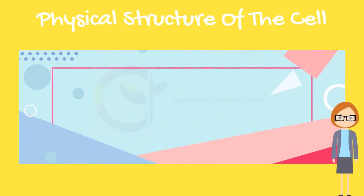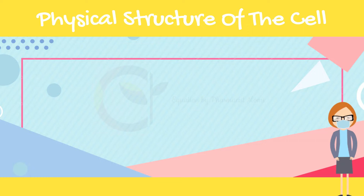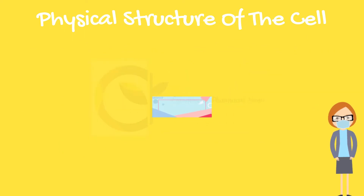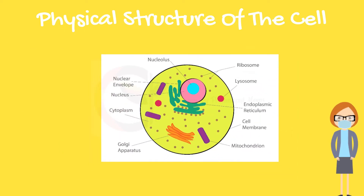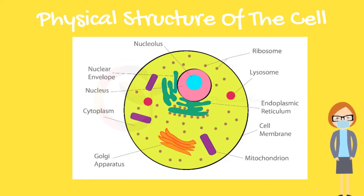The cell is not merely a bag of fluid and chemicals — it also contains highly organized physical structures called organelles. Some of the principal organelles of the cell include the cell membrane, nuclear membrane, endoplasmic reticulum (ER), Golgi apparatus, mitochondria, lysosomes, and centrioles. The cell and its organelles are surrounded by membranes composed of lipids and proteins.